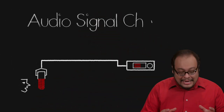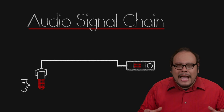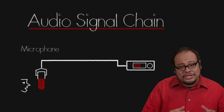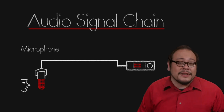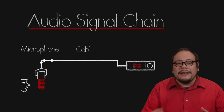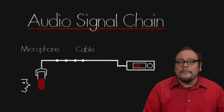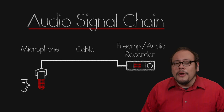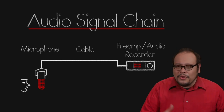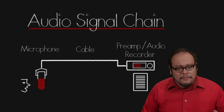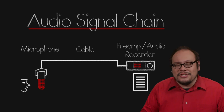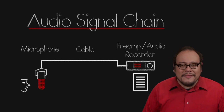For this discussion, let's imagine recording sound as a signal chain. At the source, a microphone converts sound energy into analog electric signals. This signal is carried down a cable and into a preamp on an audio recorder or camera where it is converted to a digital file. Now let's dive in and look at each piece of this signal chain, starting with the end.